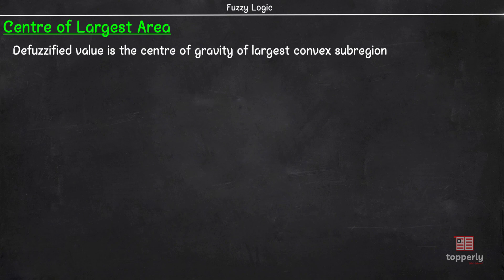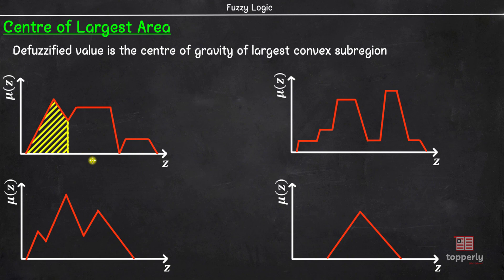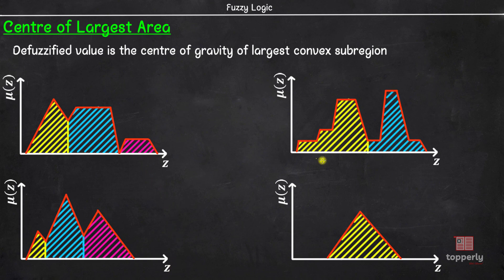So what is a convex subregion? To understand this let us take a few examples. In each of these graphs, let us divide the graph into convex subregions. To do that you have to start from the leftmost point and keep moving to the right until the slope of the curve changes from negative to non-negative. In this graph the first occurrence of that change is here, so the first convex subregion is this. Repeating the exercise, the second and third convex subregions can be identified similarly. In similar fashion, another graph has two convex subregions, another has three, and one graph has only one convex subregion.